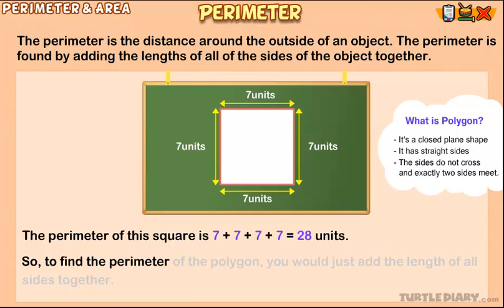To find the perimeter of the polygon, you would just add the length of all sides together.